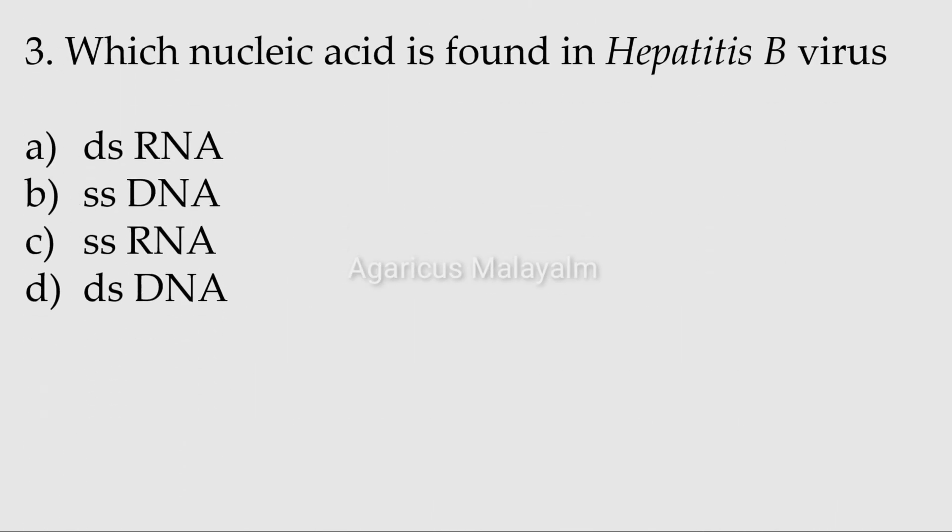Third question: which nucleic acid is found in hepatitis B virus? Answer options: option A, double-stranded RNA; option B, single-stranded DNA; option C, single-stranded RNA; option D, double-stranded DNA.